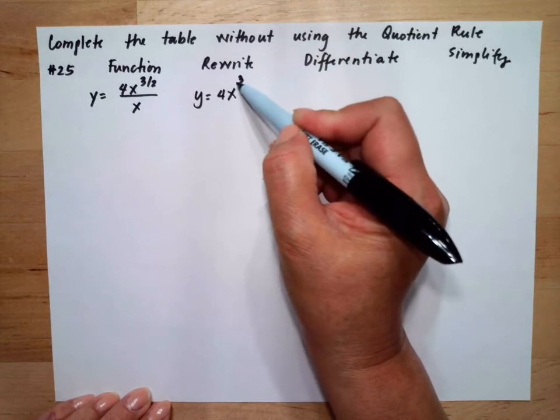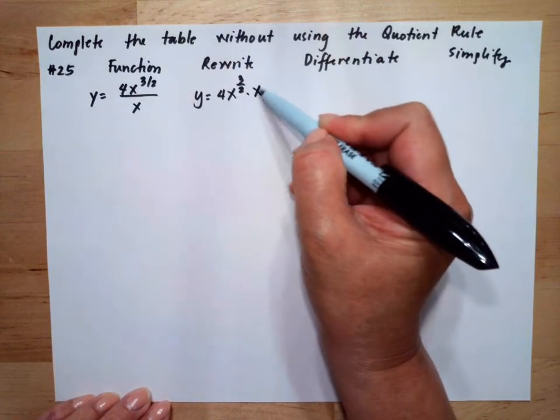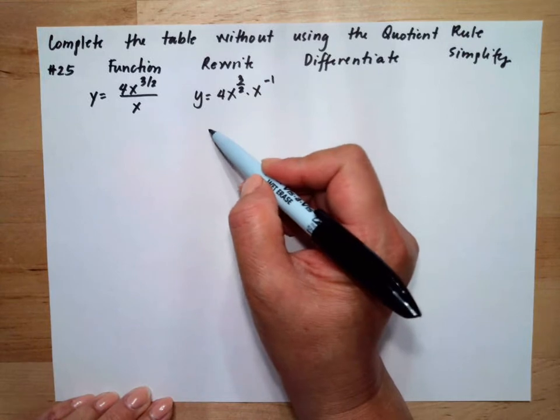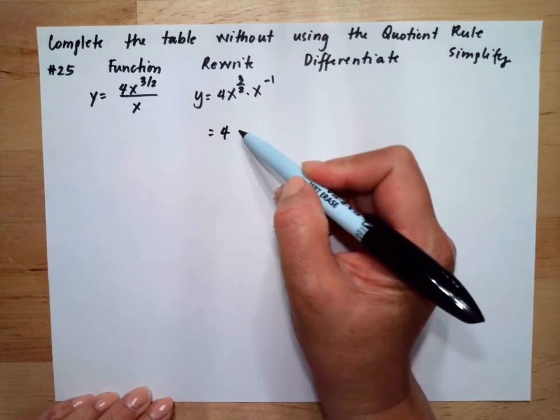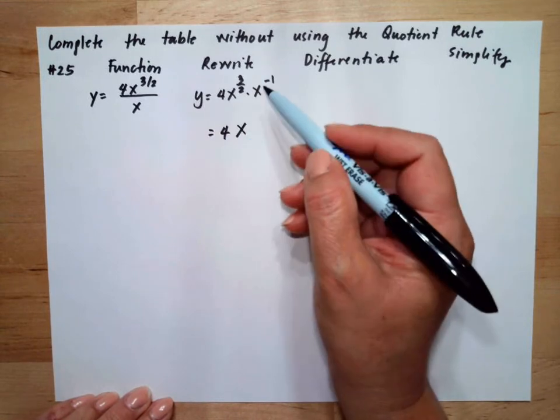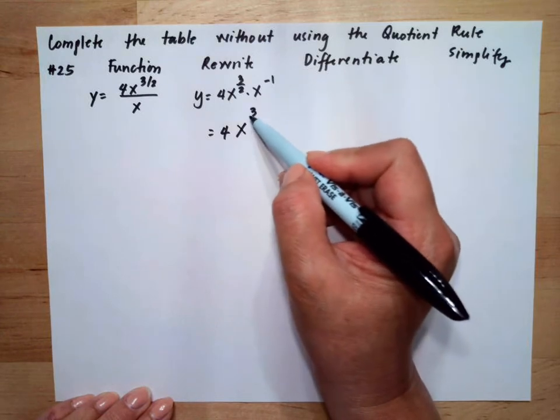4x to the 3/2 multiplied by x to the negative 1. This can be equal to 4. Applying the rules for exponents, this will be 3/2 minus 1.